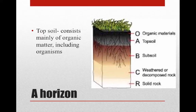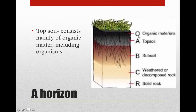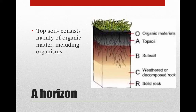Our topsoil is the A horizon. Above that we have the O layer — our organic materials like grass and roots. The A horizon consists mainly of organic matter including organisms. The lower part of the A horizon is a mixture of mineral matter and organic matter, so as we go deeper we're losing organic matter and gaining more mineral matter.